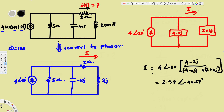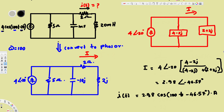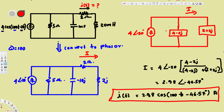We now convert this phasor current back to the time domain. We pick up the magnitude 2.98 and write it as a cosine: i(t) = 2.98·cos(100t - 46.57°) amperes. That is our final answer for the current through the two ohm resistor, and that's how we solve this type of problem.